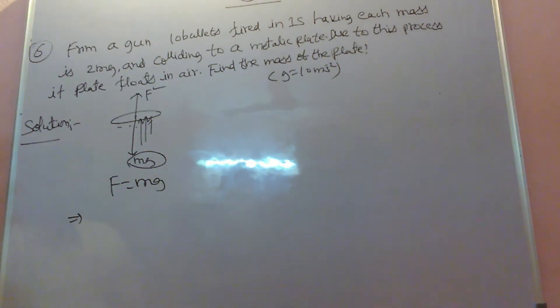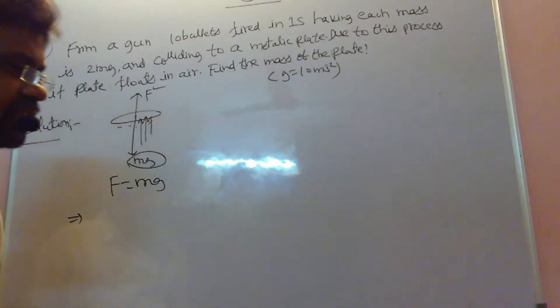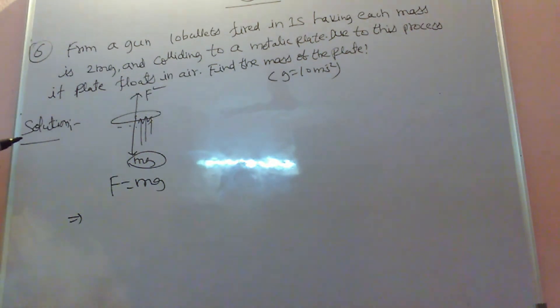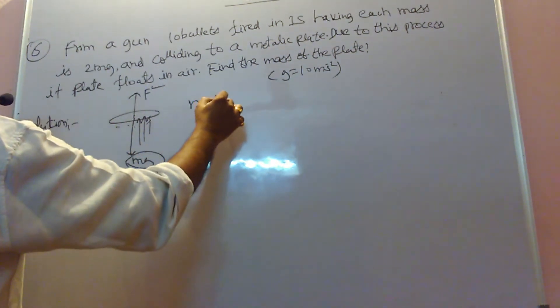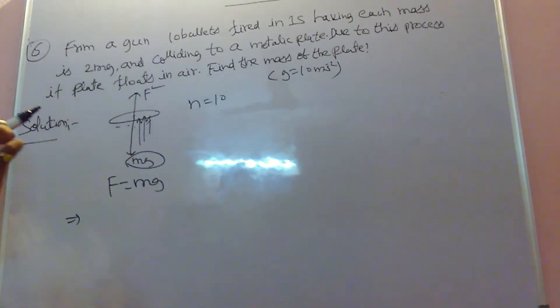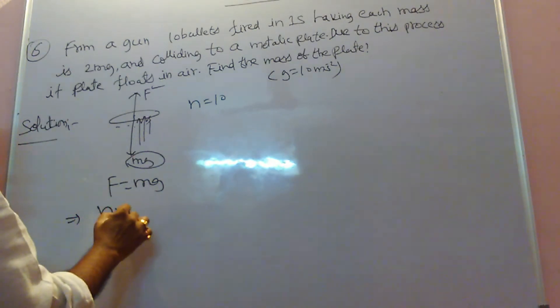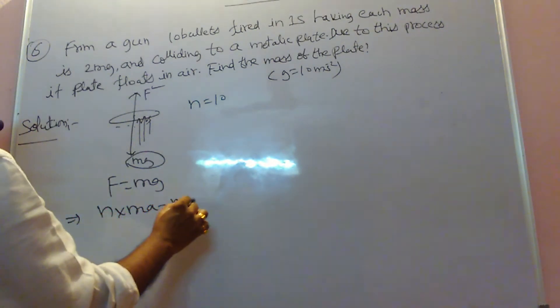What is the formula for F? Ma, according to Newton's second law. This belongs to one bullet. But here, how many bullets? N bullets, number of bullets is ten. So one bullet exerts Ma force. N bullets? N into Ma force exerting. That equals to mg.